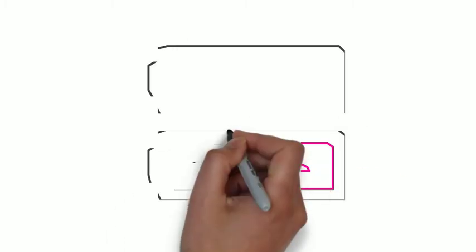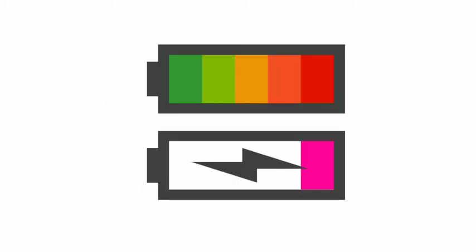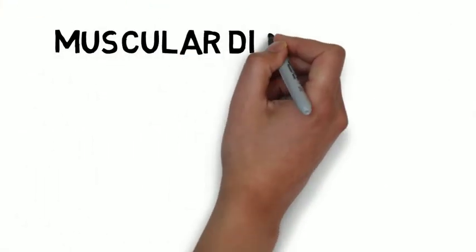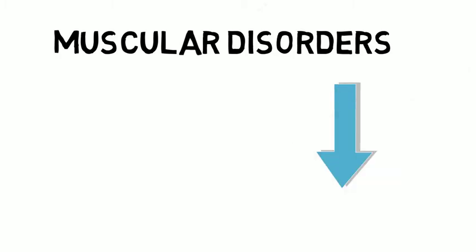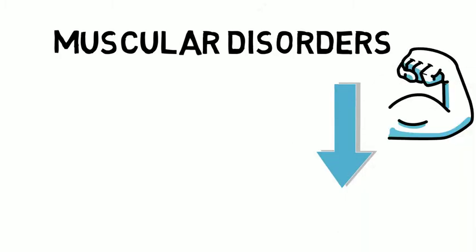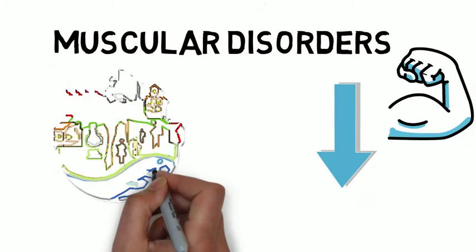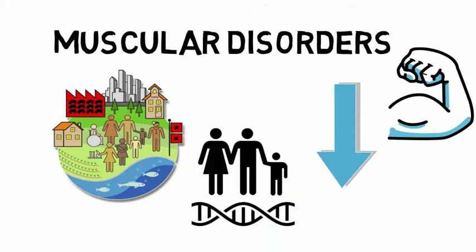Muscles make up roughly 40% of your body weight and consume the majority of your body's energy. Thus, any disorder that affects the muscles has a huge impact on the person. There are numerous muscular disorders that reduce a person's muscle mass, which can be caused by either environmental or genetic influences.